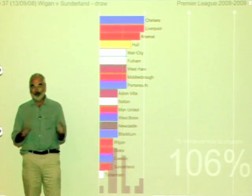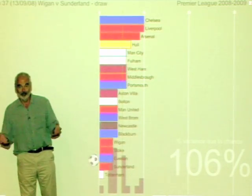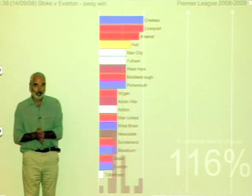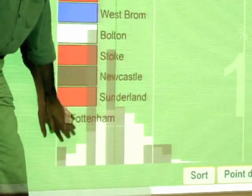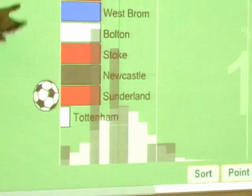It wouldn't make very interesting football and people might not think it's worth paying a lot of money to watch, but if you did do that you would end up with a distribution — we can work this out using some basic probability theory — that looked like this. This is the sort of distribution we'd expect the points to have.